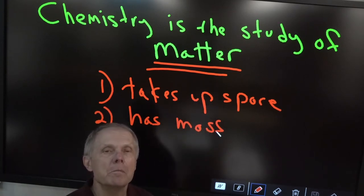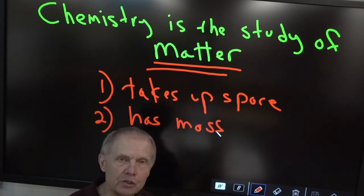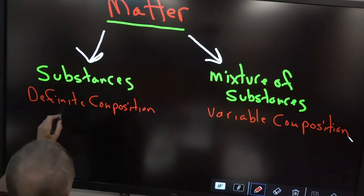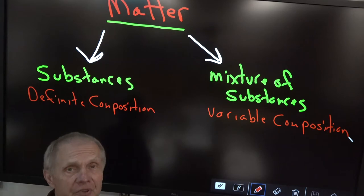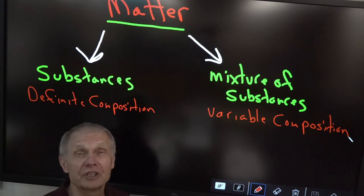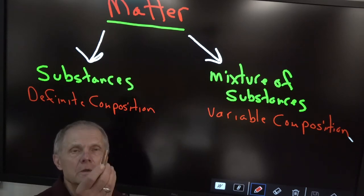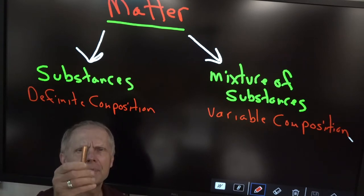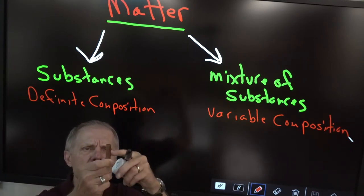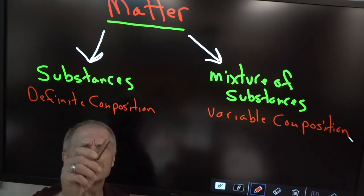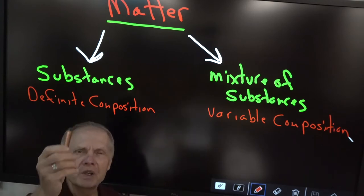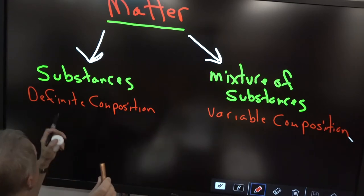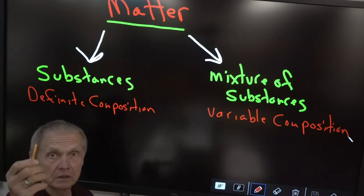Matter is split up into two things. First, substances, which means they have definite composition. A substance with definite composition would be an element, like this bar or cylinder of copper. If I take a sample of the top, middle, and bottom of this cylinder, I'm going to find copper at the top, middle, and bottom. It has definite composition.